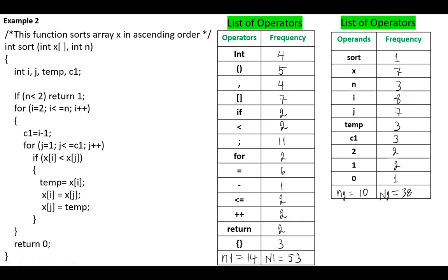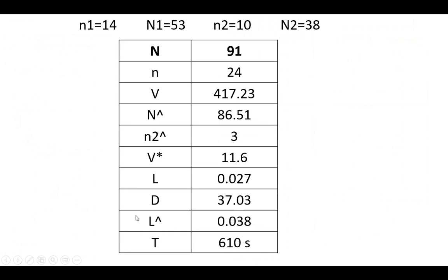Now having these values, small n1, small n2, capital N1, capital N2, we can compute different measures. For example, capital N equals 91, n equals 24, volume 417.23, etc., and time T, 610 seconds.